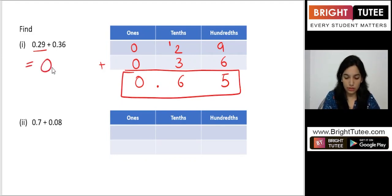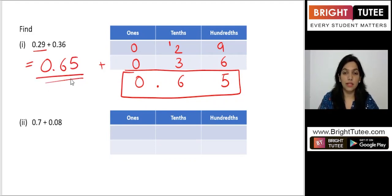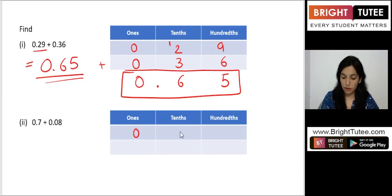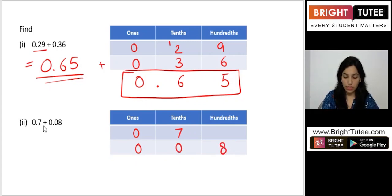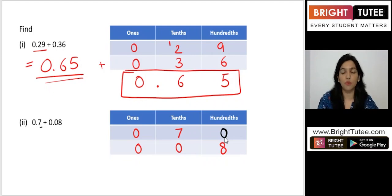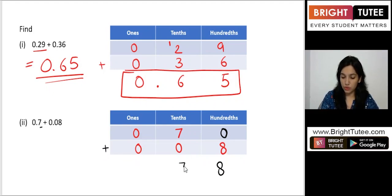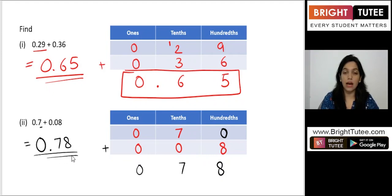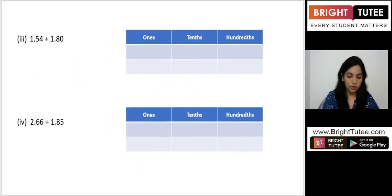Next, let's solve 0.7 plus 0.08. In the place value chart, 0.7 has 7 at the tenths place and nothing at the hundredths. Since 0.08 has 8 at the hundredths place, we write a 0 as a placeholder in the first number's hundredths column — this doesn't change the value. Adding: 0 plus 8 is 8, 7 plus 0 is 7, 0 plus 0 is 0. The answer is 0.78.